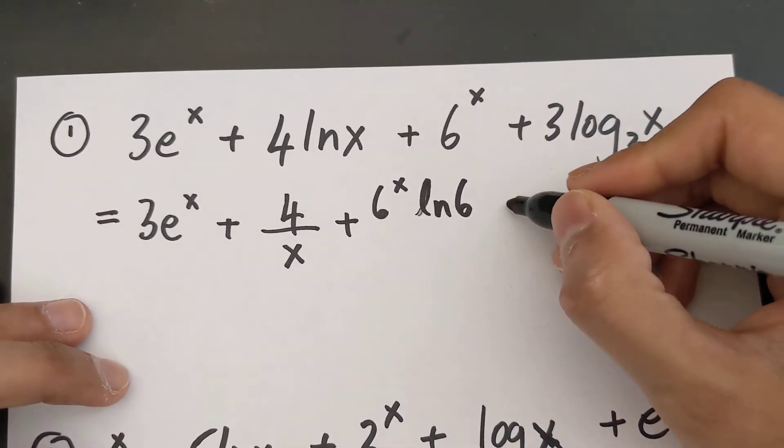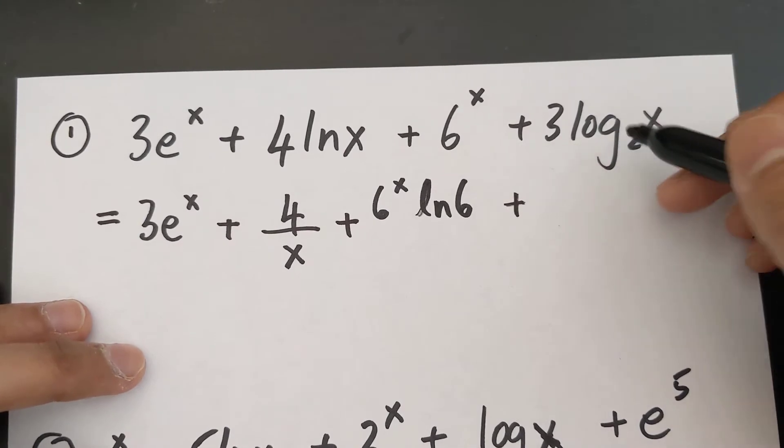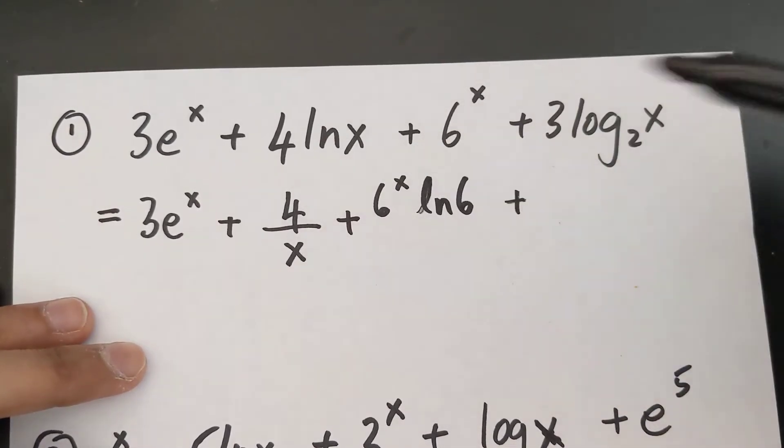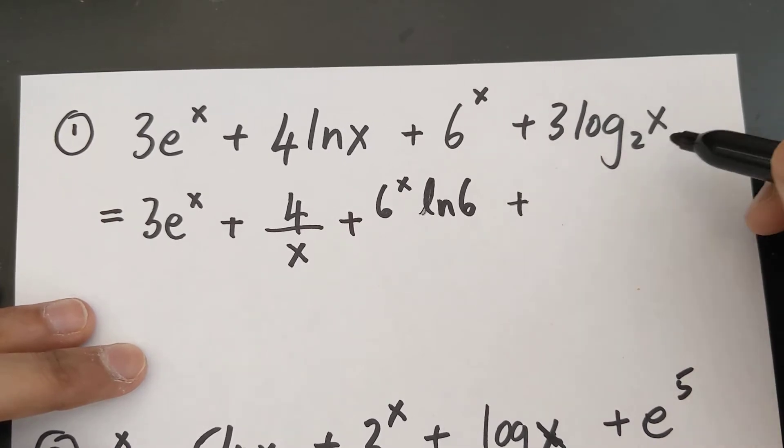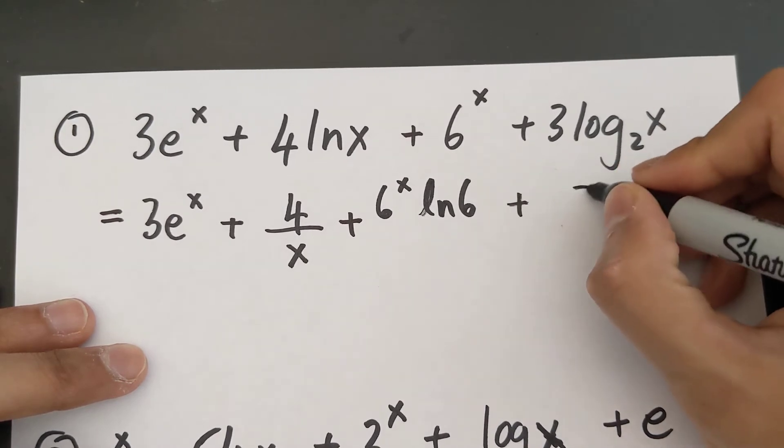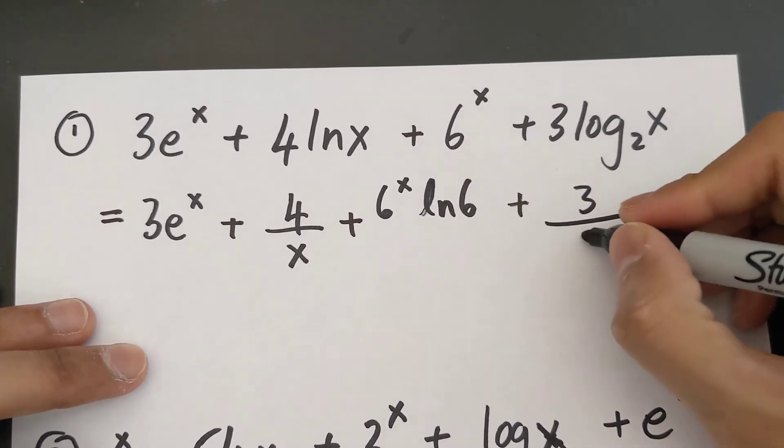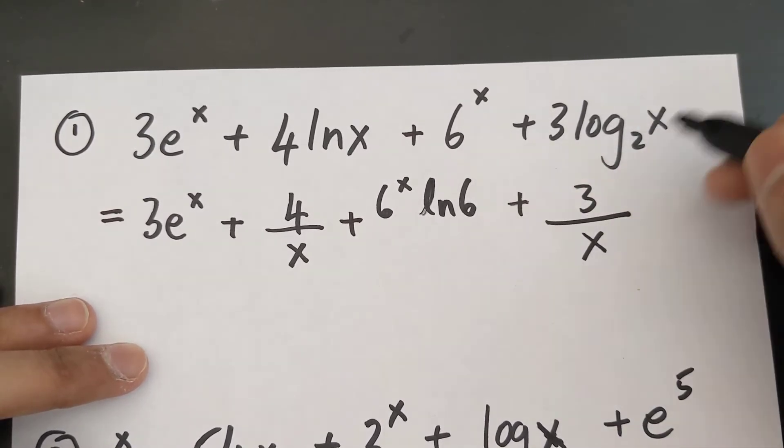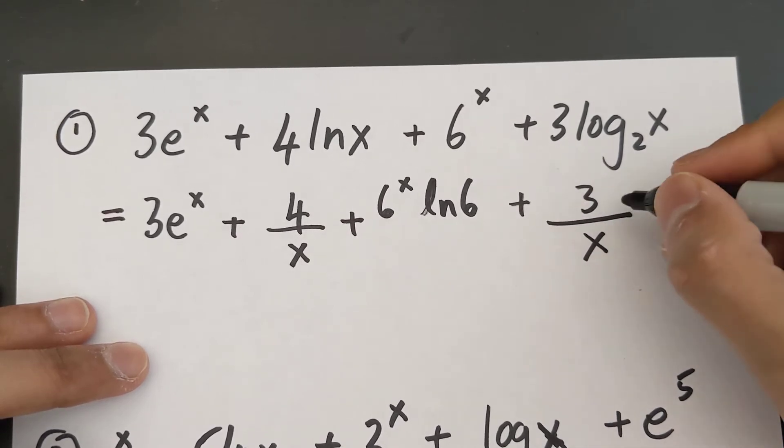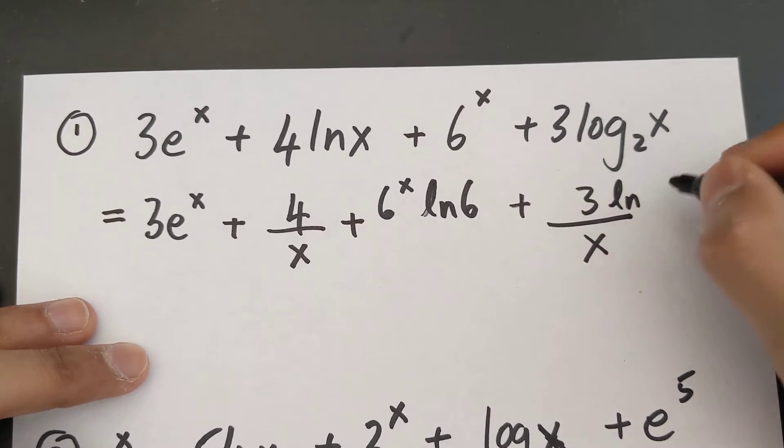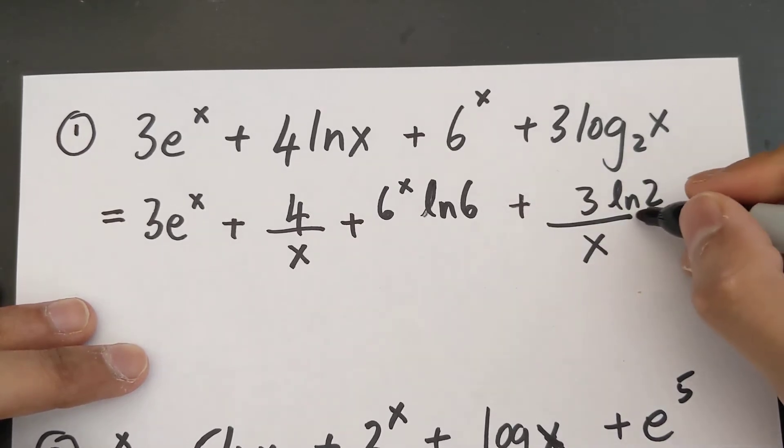And for log function, it's similar to a ln function. The only difference is that the base comes into account here. So the derivative of 3 log base 2 of x is 3 over x, just like ln log is over x, but you also have to multiply the top by ln of the base. So 3 ln 2 over x.